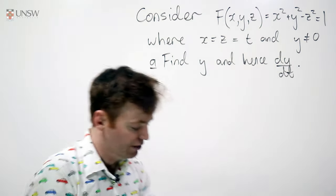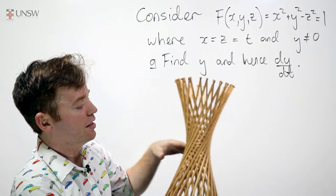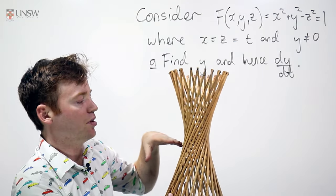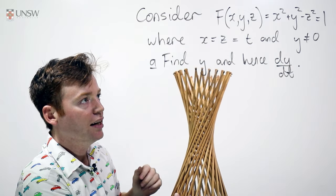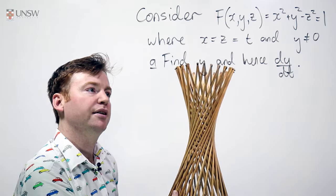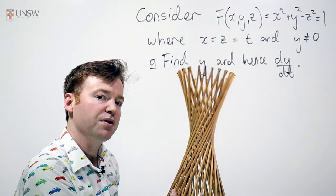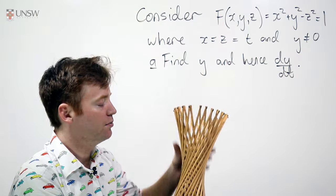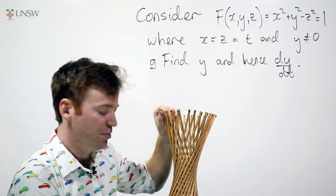Here is a hyperboloid I've prepared for you earlier. If you take z cross-sections, so z is equal to some constant, you end up with circles. If you take x or y to be constant, then you end up with hyperbolas. So you get something which is known as the hyperboloid, and it has some wonderful properties which we will explore in this question.